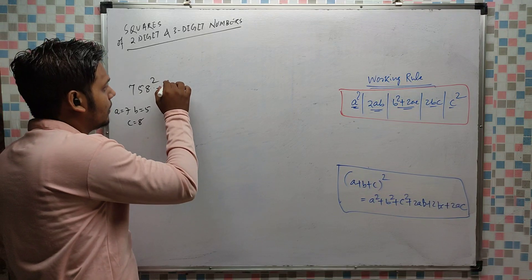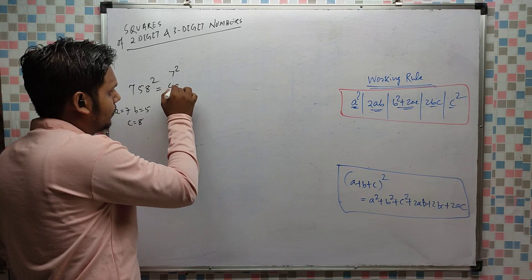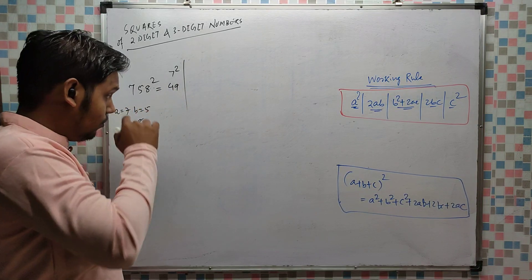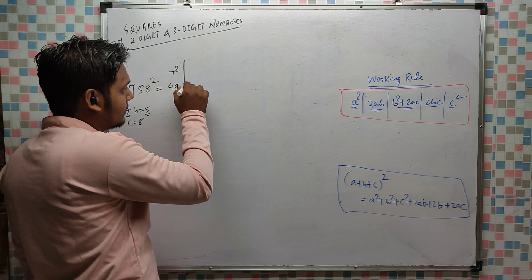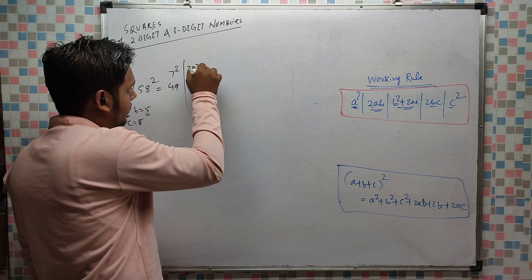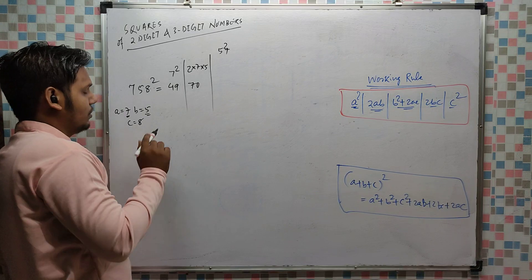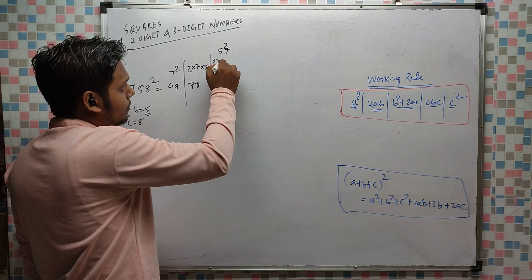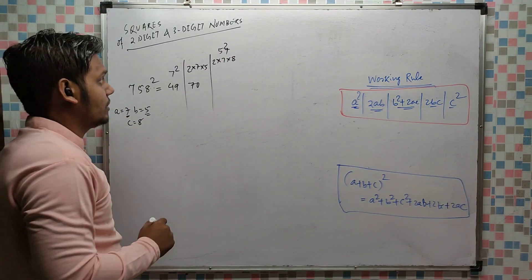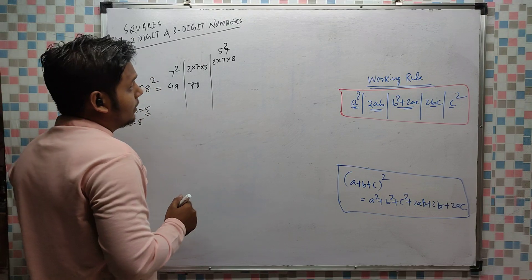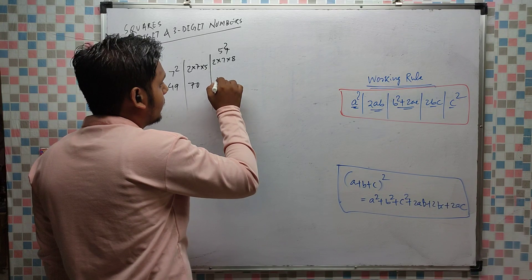Now let's do 758²: a = 7, b = 5, c = 8. a² = 7² = 49; 2ab = 2×7×5 = 70; b² + 2ac = 5² + 2×7×8 = 25 + 112 = 137; 2bc = 2×5×8 = 80; c² = 8² = 64.